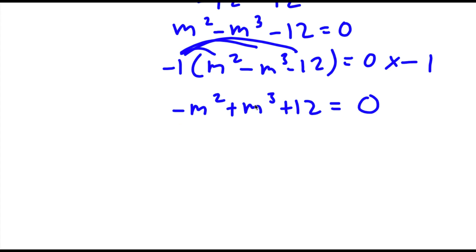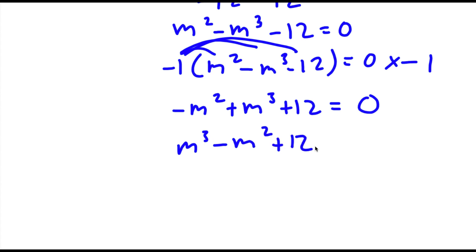Now I'm going to rearrange this into highest degree to lowest degree. m to the power of 3 is the highest degree, so that goes first, then m squared, and then 12 is last.